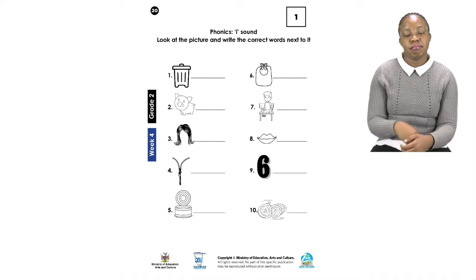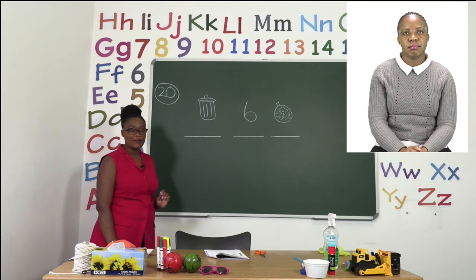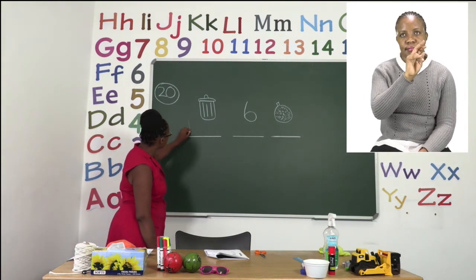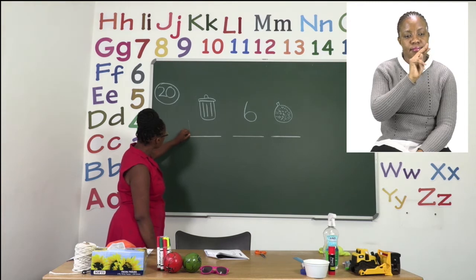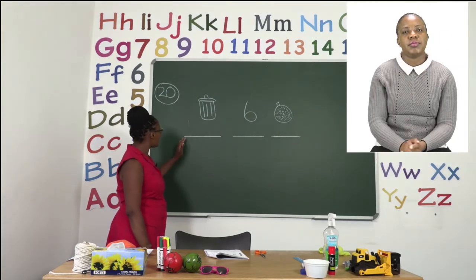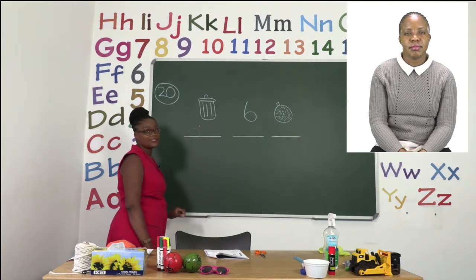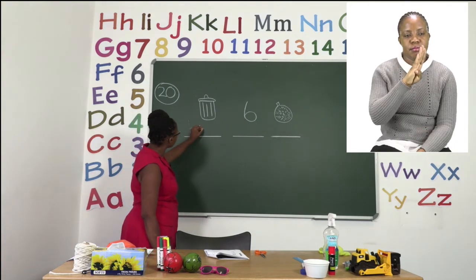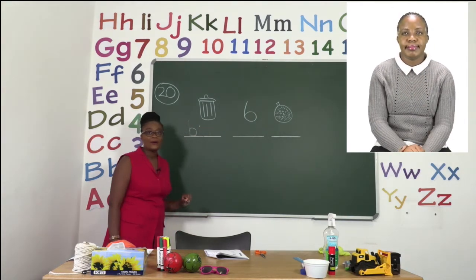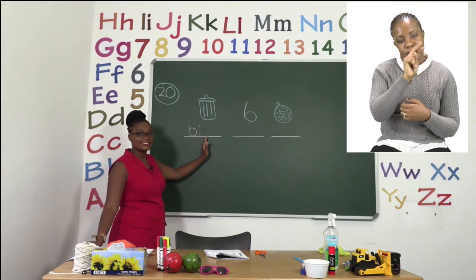The first picture in our booklet is a bin. So we say B-I-N, bin. We are going to write our B — small letter, you go down, up and round for B. Then we use our sound I. Don't forget the head of the letter. And then we have N — down and round. Now we have written the name of the object: B-I-N, bin.